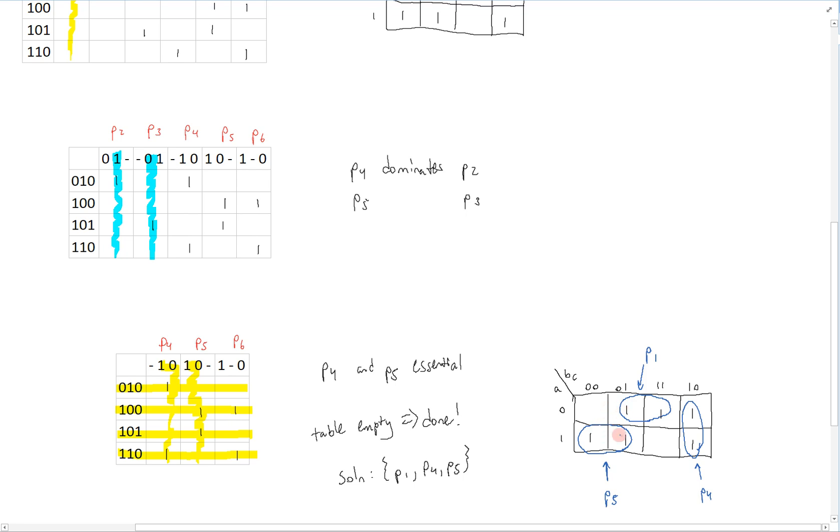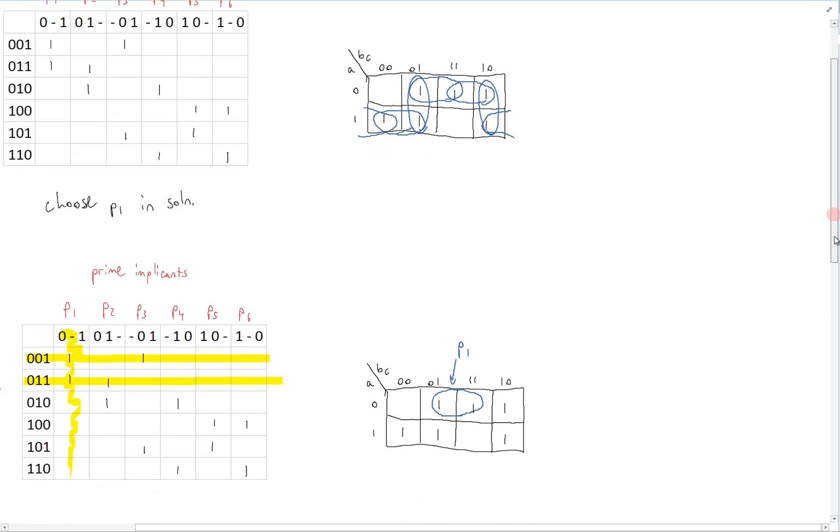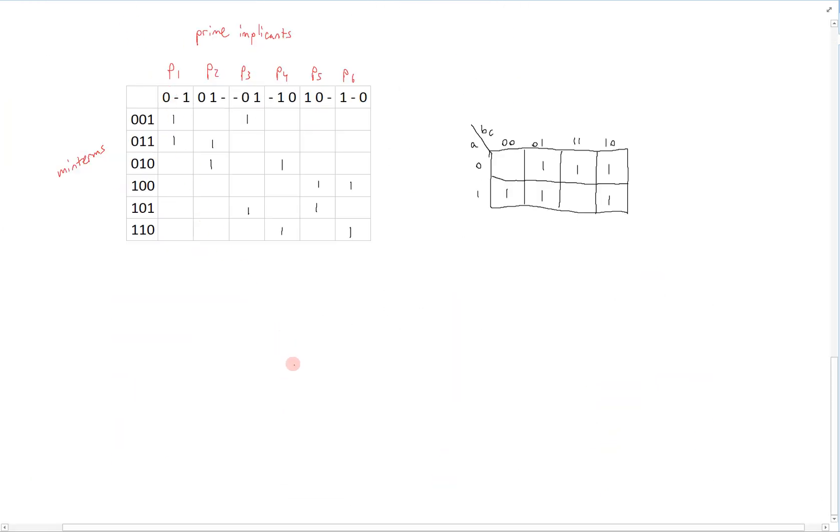Now, this isn't the only possible solution to the original problem up here. We come about the solution because we chose to include P1. Well, we could have done something else. We could have chosen with the original table to include P2. In that case, we would highlight this one. Its corresponding minterms would get crossed off the table.